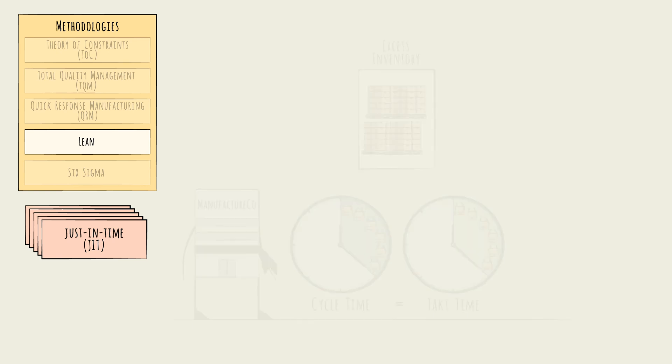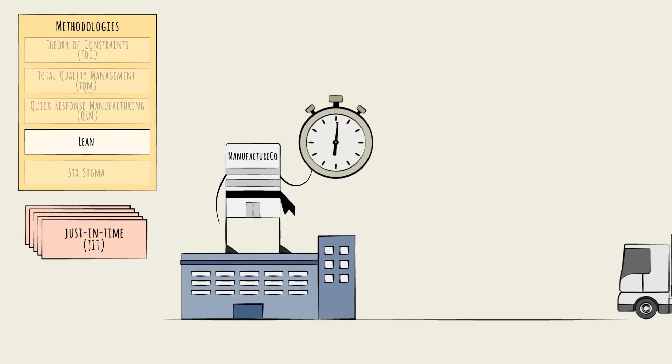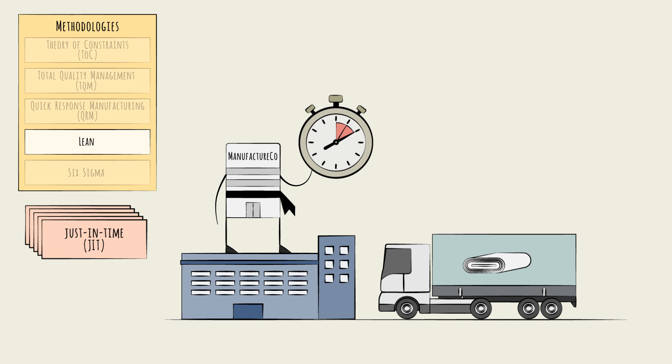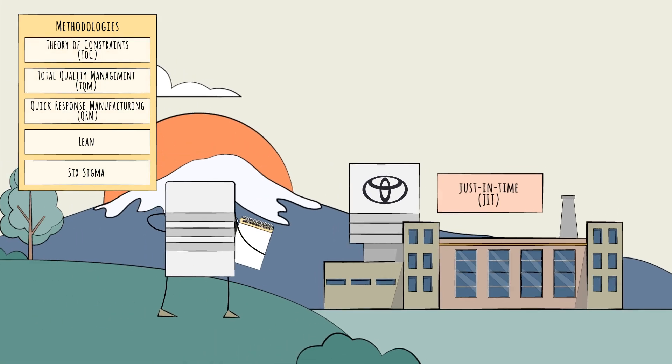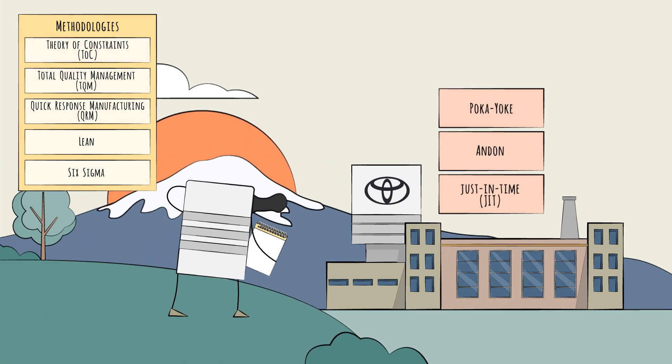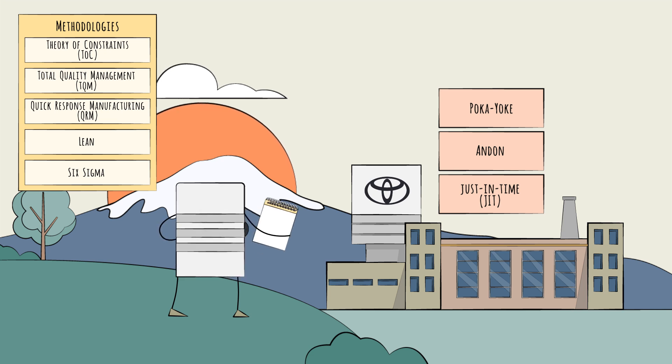JIT usually relies on close coordination with suppliers, since raw materials delivery needs to be well-timed with the manufacturing itself. While JIT, Andon, and Poka-yoke are all strategies that originated with Toyota as part of TPS, they have become mainstays across industries.